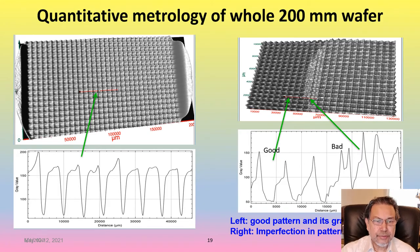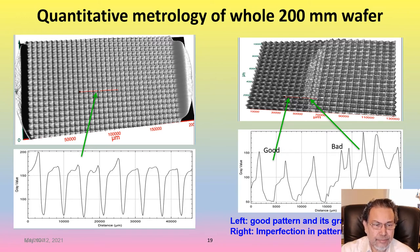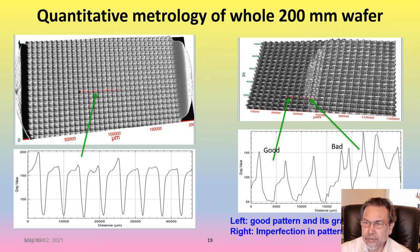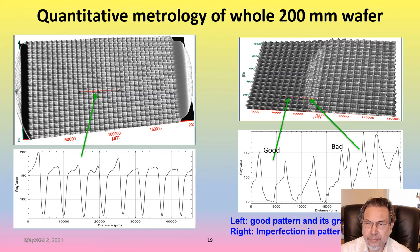Here are examples of imaging done by this technique. On the left is a segment of a patterned wafer — taking a scan along the red line, you can see small differences from die to die. On the right is another wafer, a segment of a 200 millimeter wafer, showing that some area in the middle has quite a bit of defect. Taking the profile shows the good area on the left and the bad area on the right, showing the pattern differences.